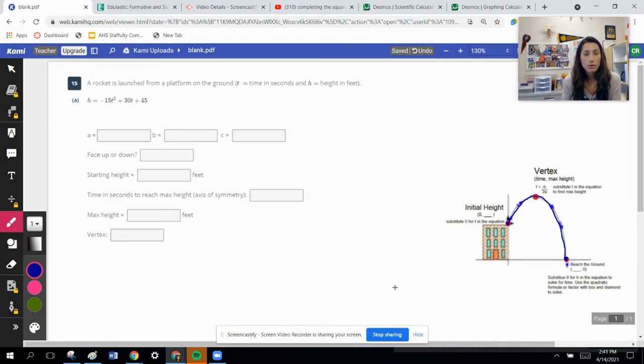So we have our a value in this equation is negative 15. This is already in standard form. We have our b value that is 30, and we have our c value that is 45. We know this is going to face down. This is a projectile motion, so everything that we kind of throw into the air will eventually reach the ground. So this is a downward facing, and we also know it's downward facing because our a value is negative.